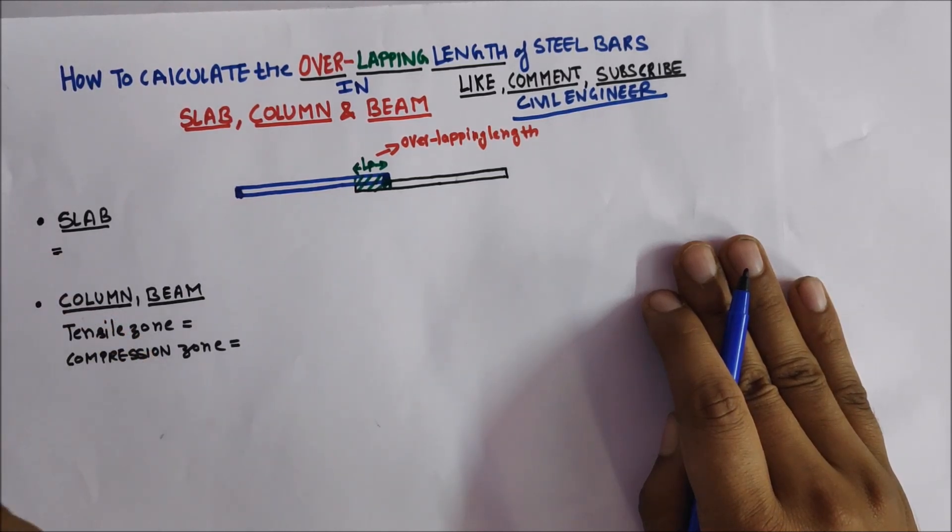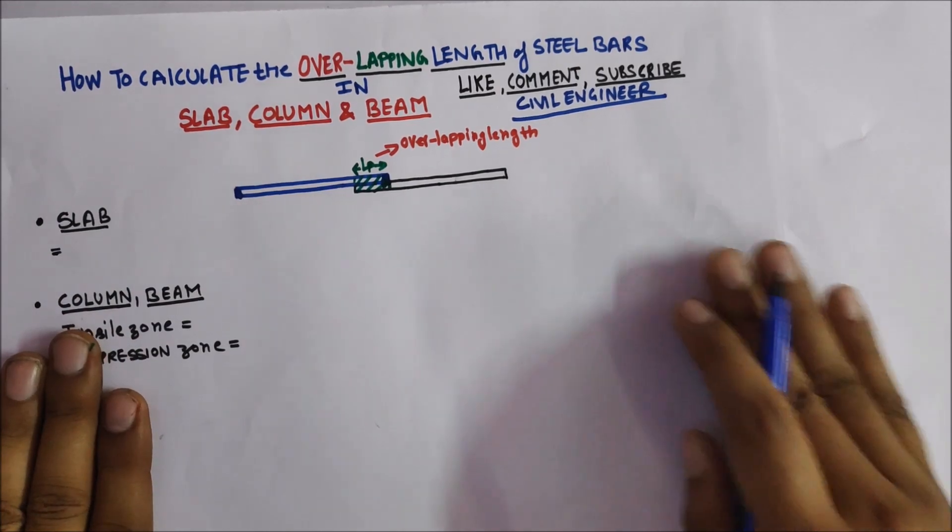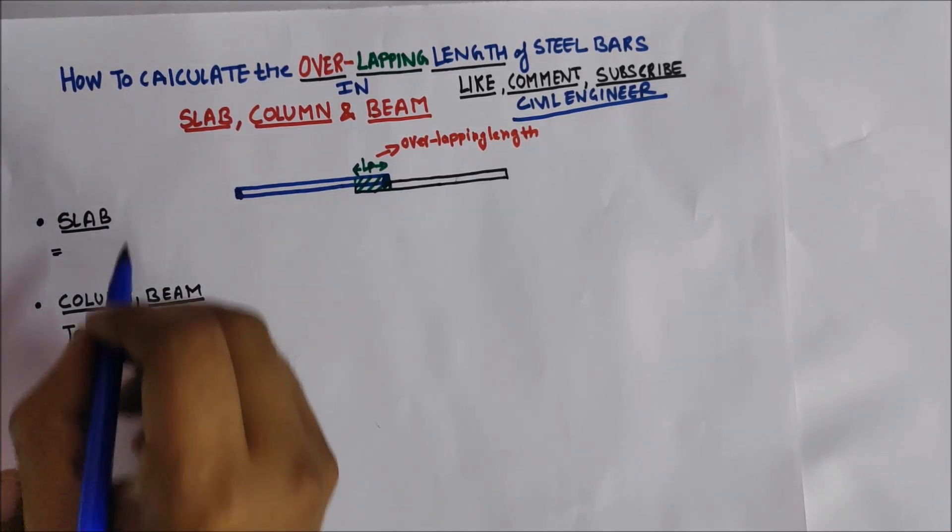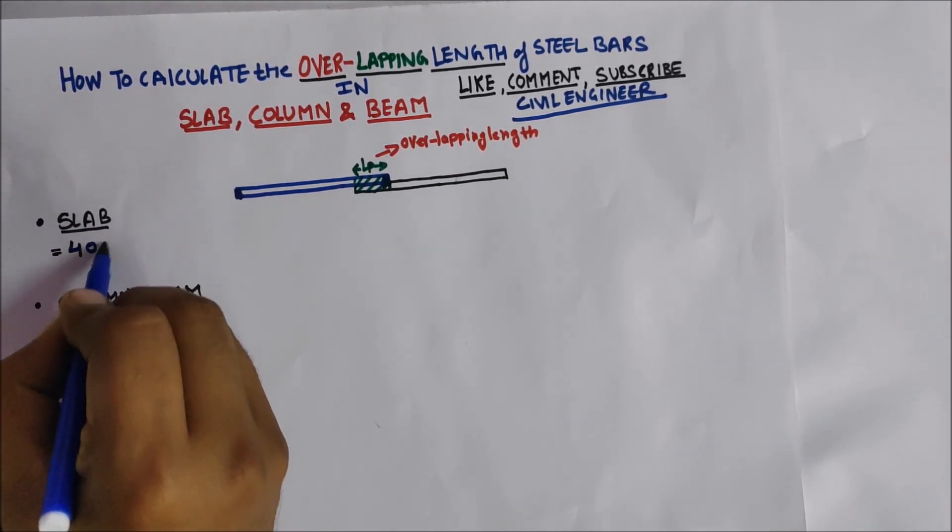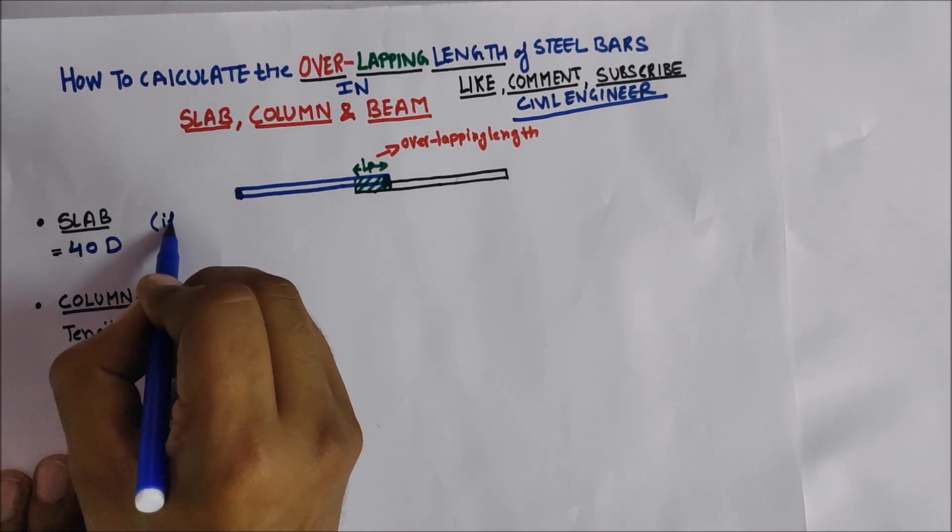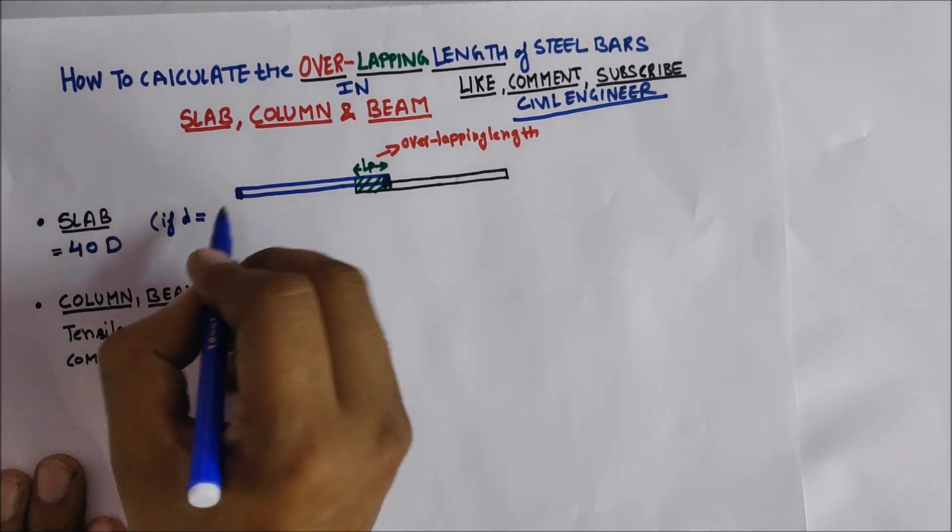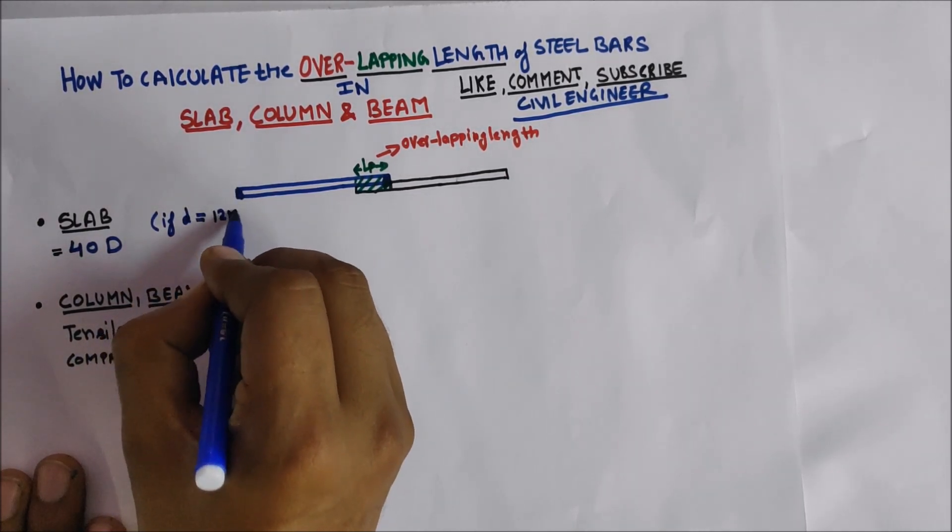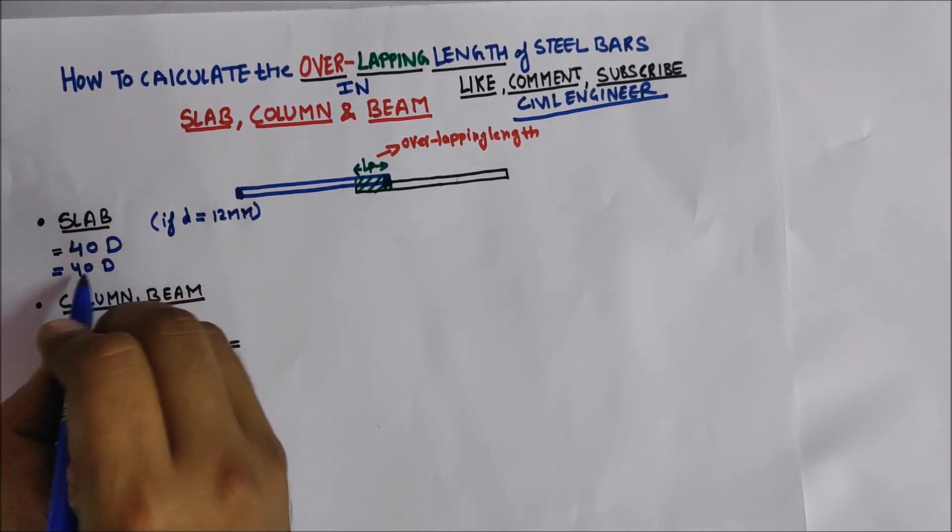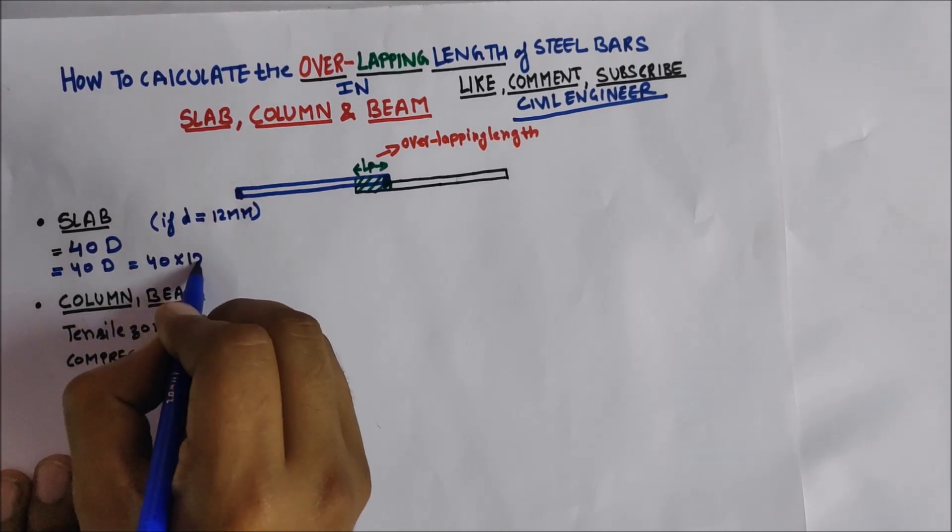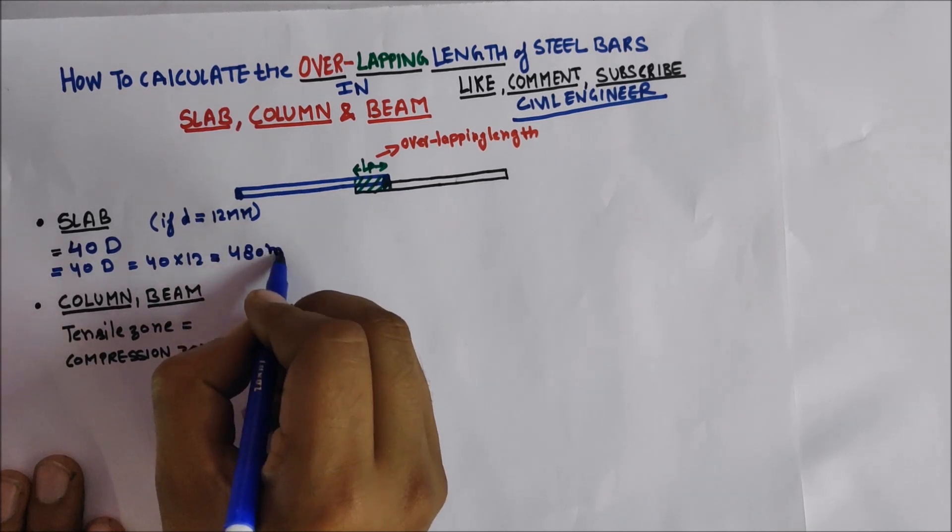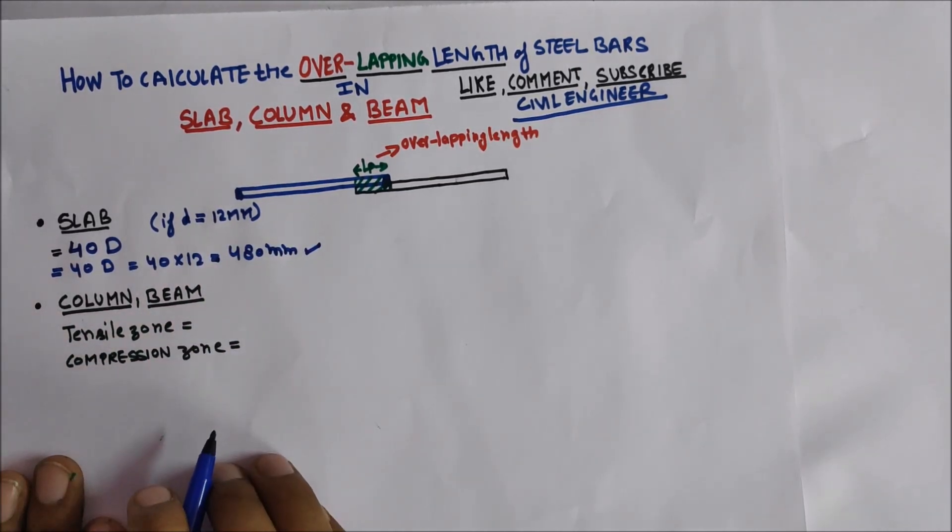Parameters set for beams, columns, and slabs. First, for the slab, we take it as 40D. For example, if we are taking diameter of bar as 12mm steel bar, what will be the overlapping length? 40 × 12, that comes out to be 480mm overlapping length for the slab.